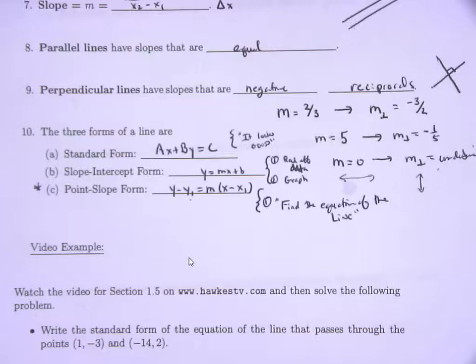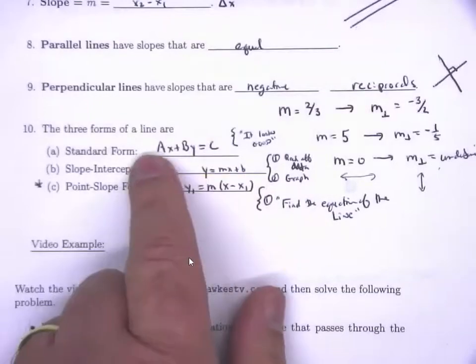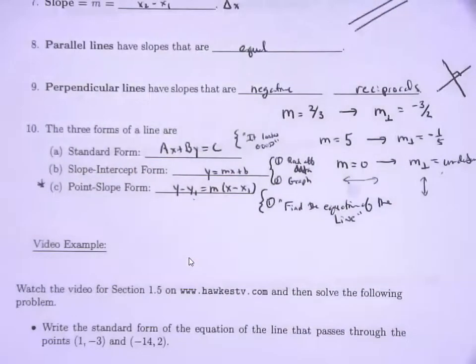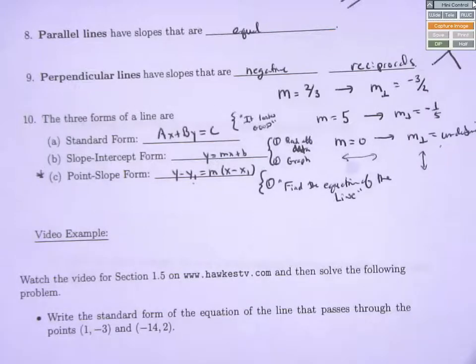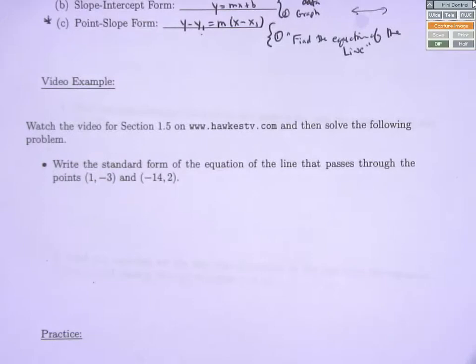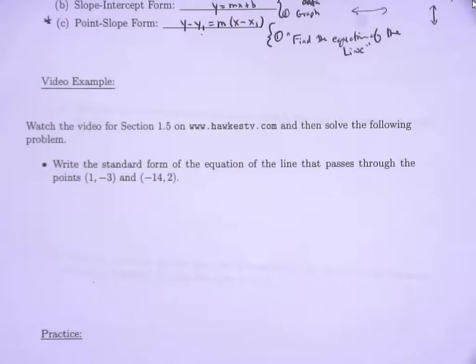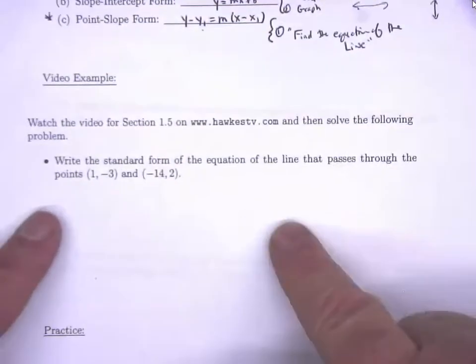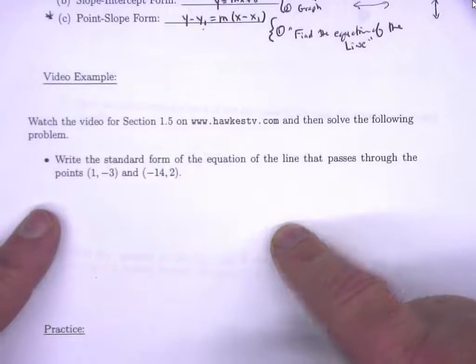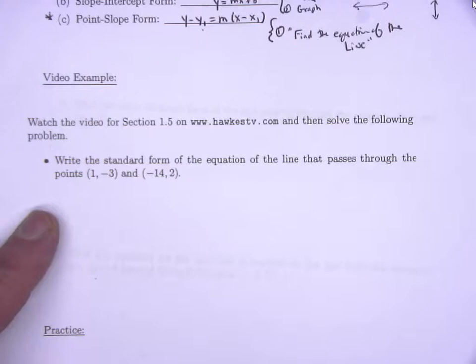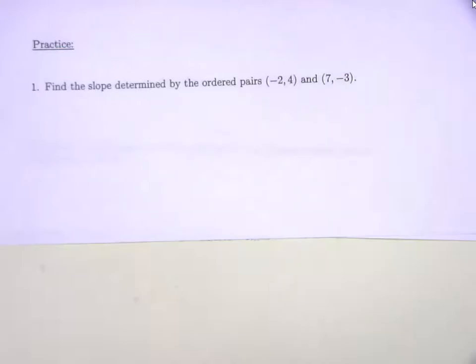There's one other form — the general form or standard form: Ax plus By equals C, where A, B, and C are integers, and A is typically a positive integer. Its purpose in life? It looks good. There's no real mathematical purpose except it's nice to write it as 3x plus 4y equals 5 in typed-up mathematics. Other than that, it has no real purpose. A, B, and C are typically integers, and A should be a positive integer to make them unique.